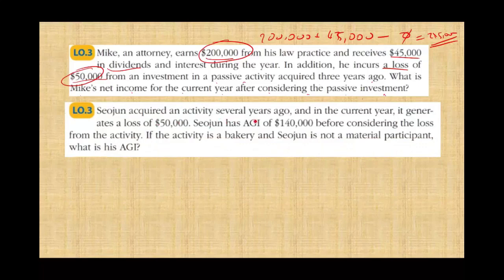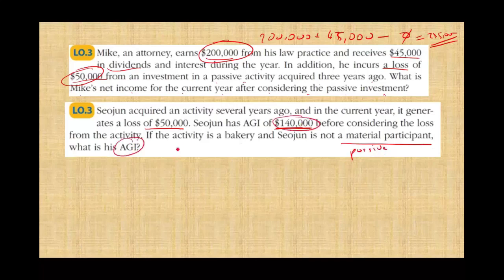Example: CEO John acquired an activity several years ago that generated a loss of $50,000 in the current year. His AGI is $140,000 before considering the loss. If the activity is a bakery and CEO John is not a material participant — meaning he is passive — his AGI remains $140,000. The $50,000 is suspended until he either has passive income from this activity or disposes of it.